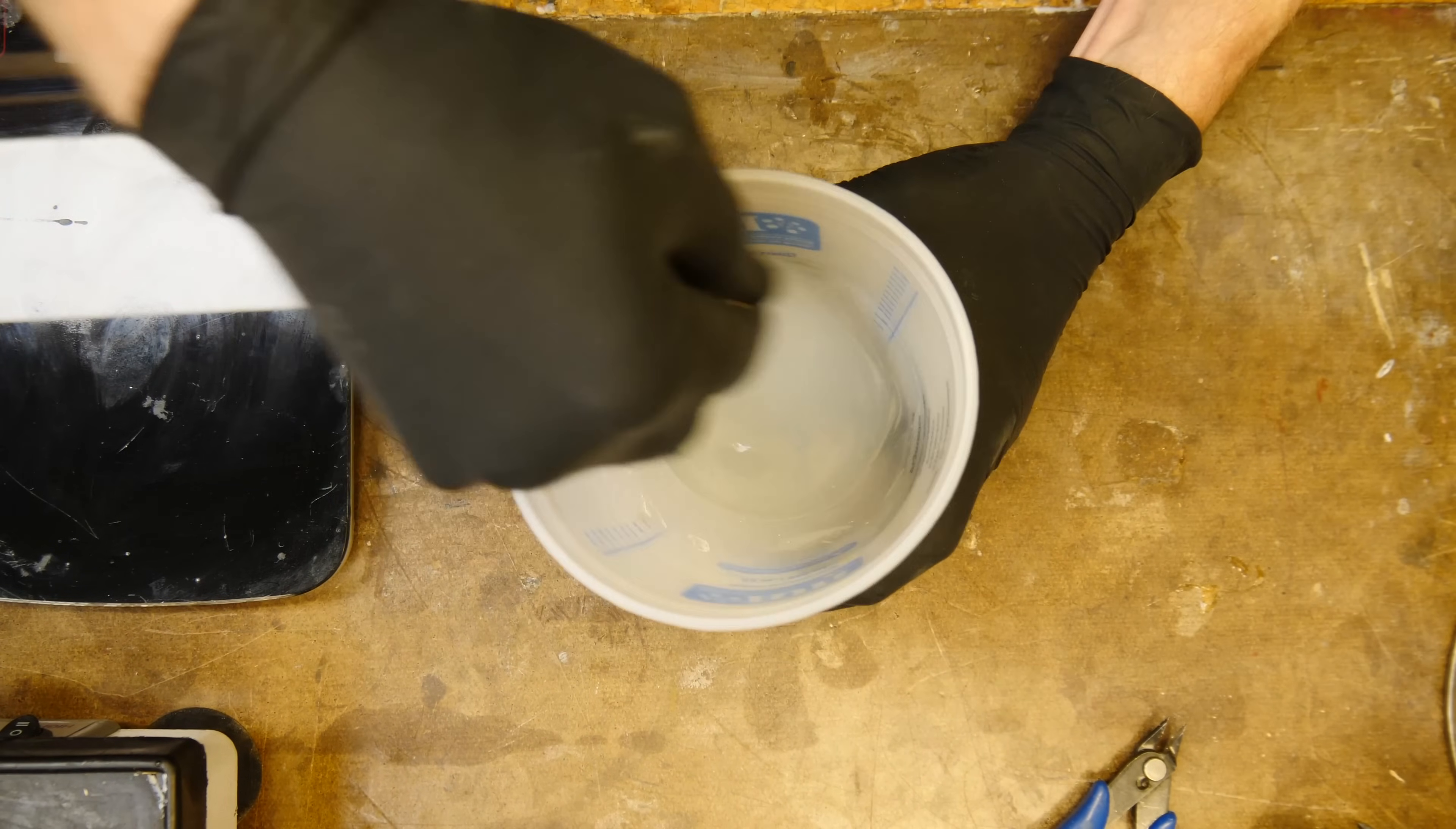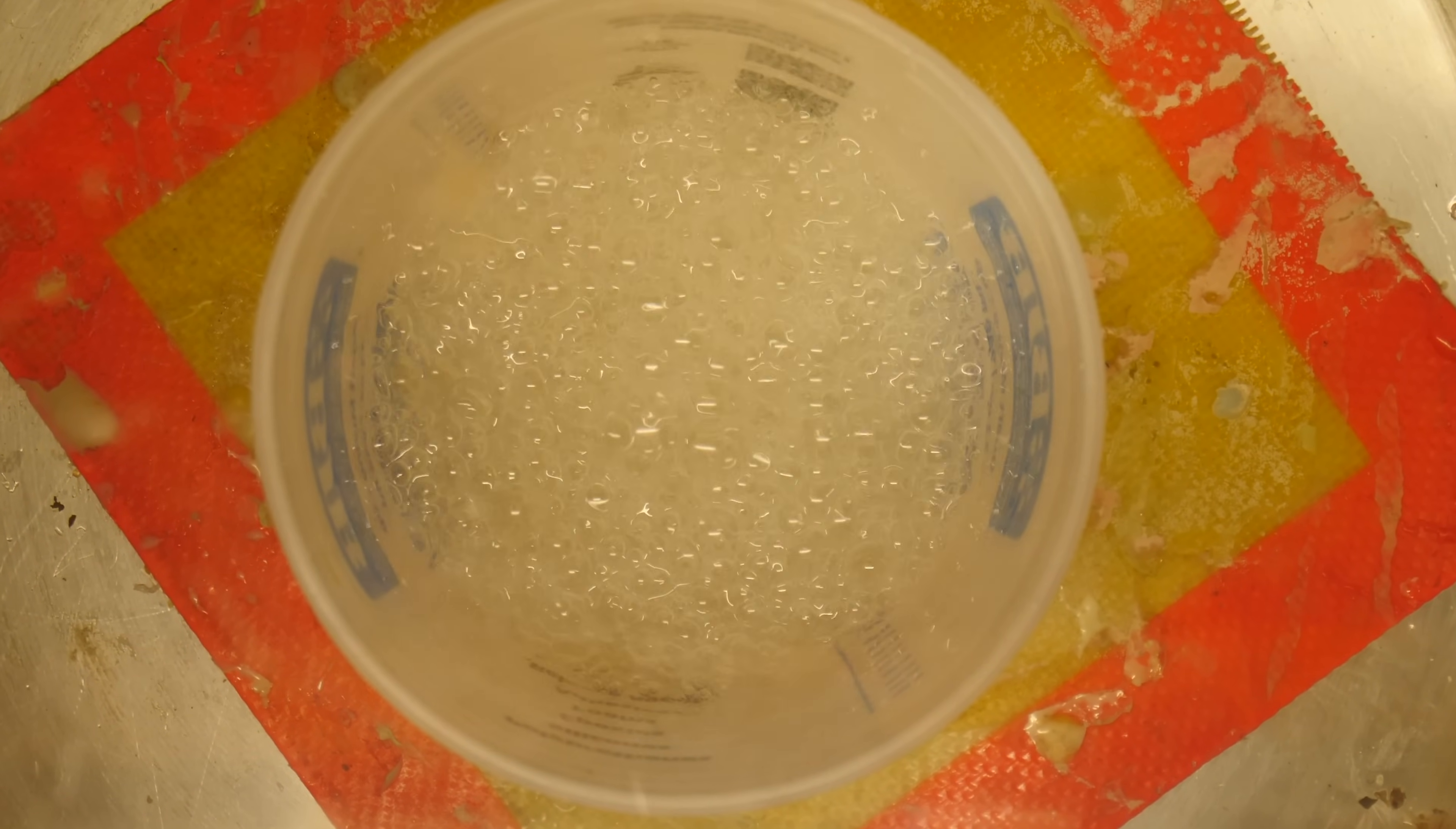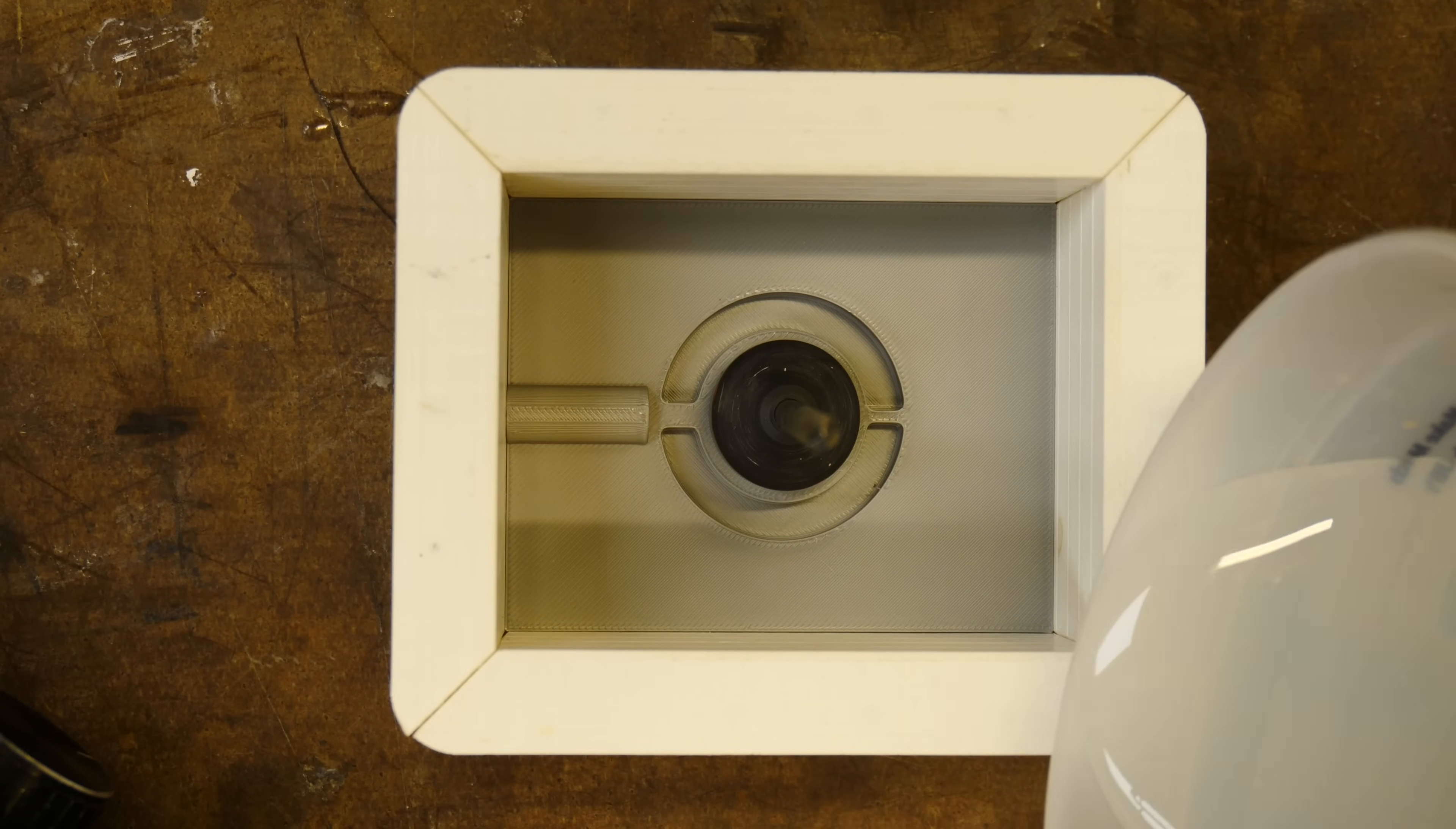We're going to mix up some BJB 5130 silicone. We're going to degas it here. Probably takes about 20 minutes, something like that, to degas in the chamber. And then we're going to put that into the magnetic mold box and mold the top half of the housing.